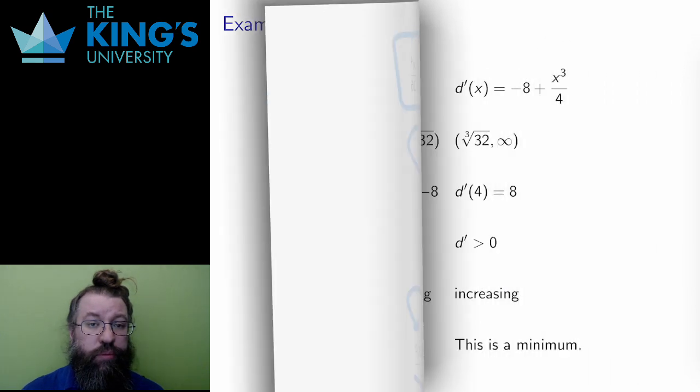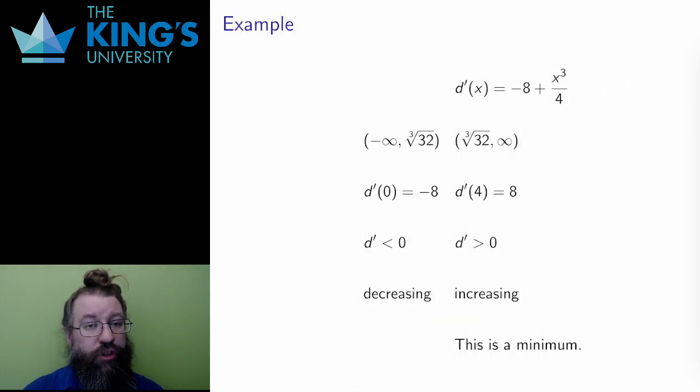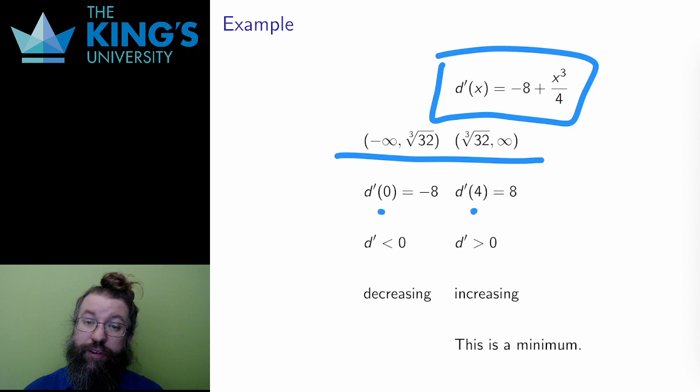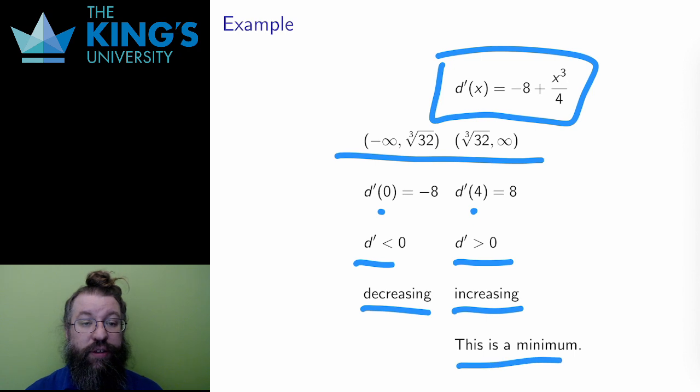Is this a minimum? Well, I could argue from the geometry that it must be like I did with the previous perimeter question, but let me also do the intervals here. The domain of the polynomial is all reals. So split it by the critical point of x equals cube root of 32. And I test the derivative at 0 and 4, which are in the two intervals. The lower derivative is negative, and the higher derivative is positive. So this is changing from decreasing to increasing. This indeed is a minimum.